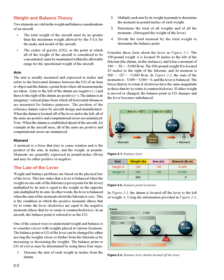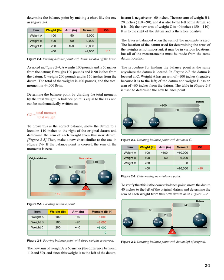The forces trying to rotate the lever clockwise have the same magnitude as those trying to rotate it counterclockwise. If either weight is moved or changed, the balance point or CG changes and the lever becomes unbalanced. In figure 2-3, the datum is located off the lever to the left of weight A. Using the information in figure 2-3, determine the balance point by making a chart like the one in figure 2-4.